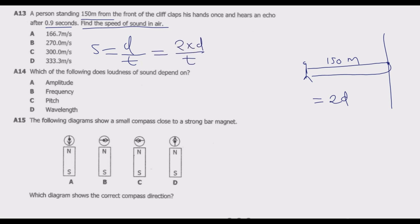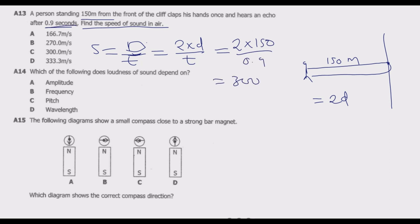Therefore the speed becomes two times the distance over time — that's the capital D we are going to use. Substituting, it will be two multiplied by 150 over time which is 0.9 seconds, giving us 300 divided by 0.9.